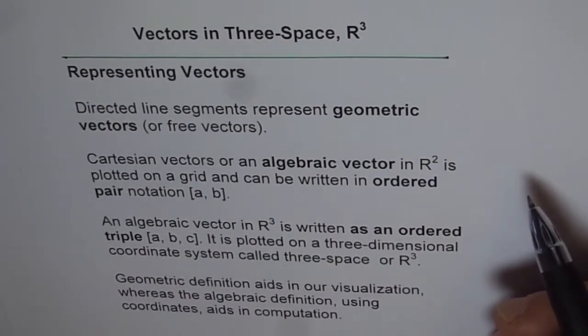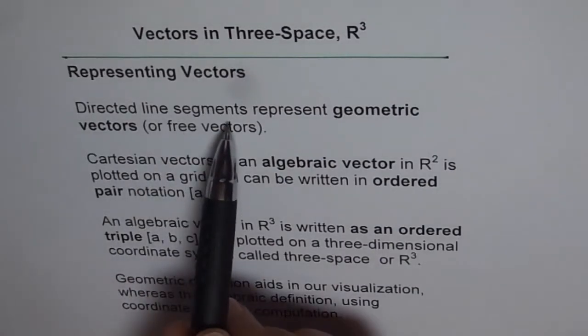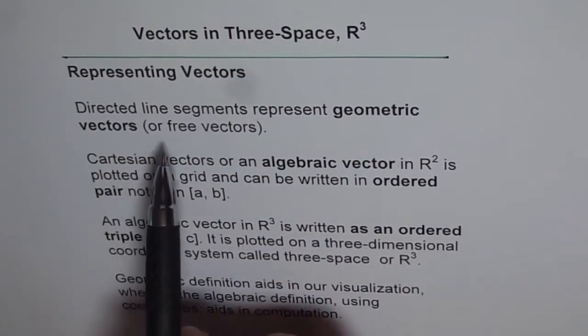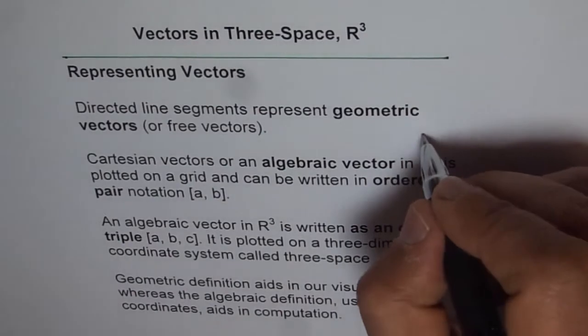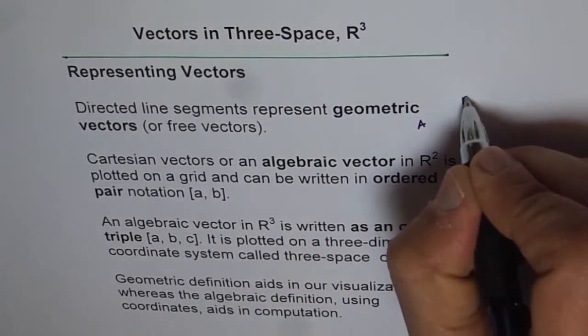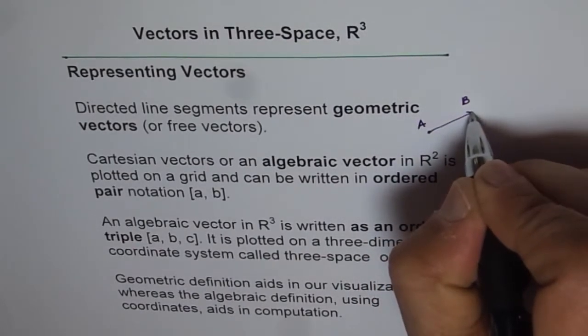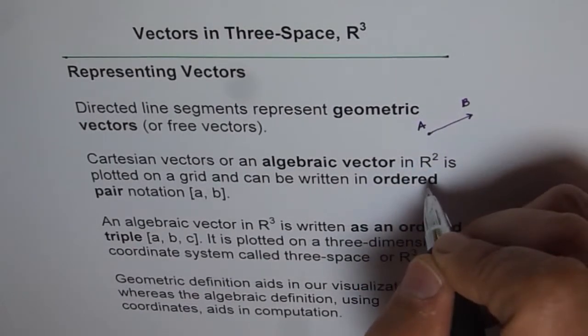How have we been representing vectors till now? First, directed line segments represented geometric vectors or free vectors. When we say a vector from point A to point B, where A is the tail and B is the head, that is a geometric vector.